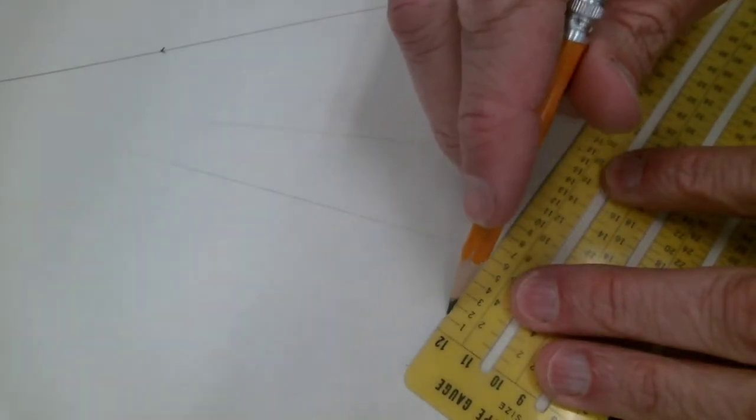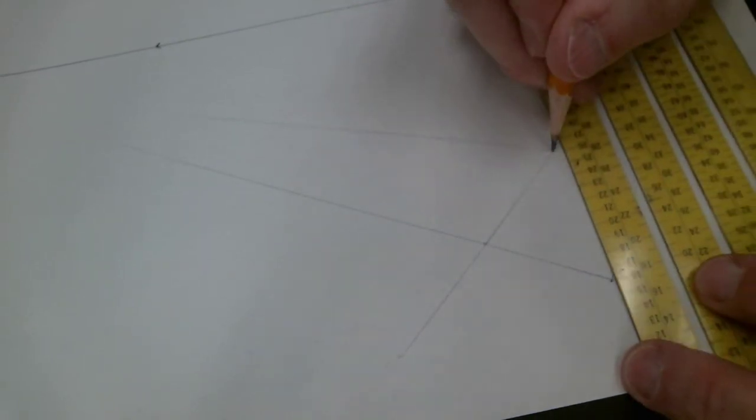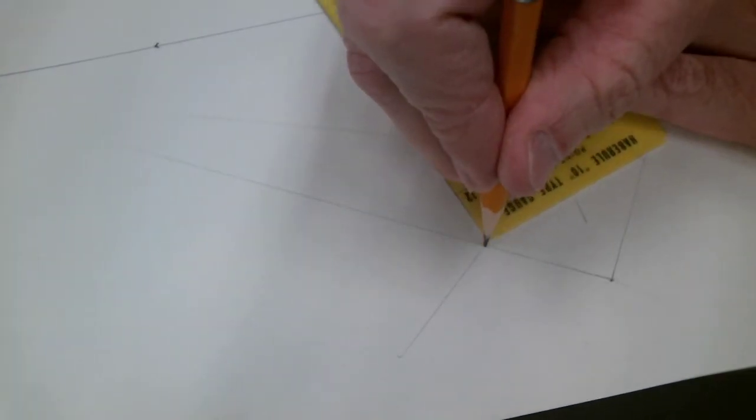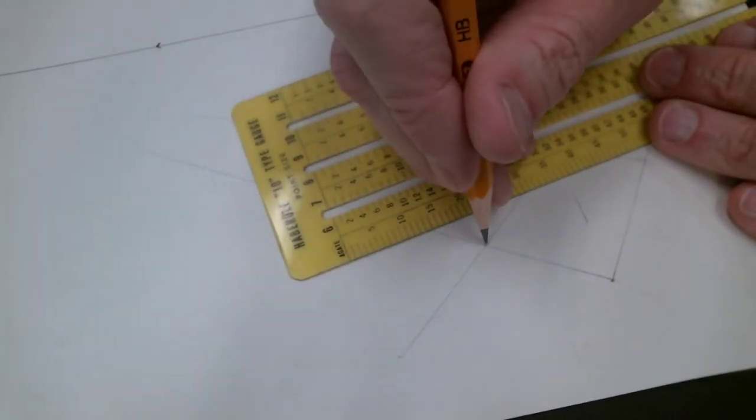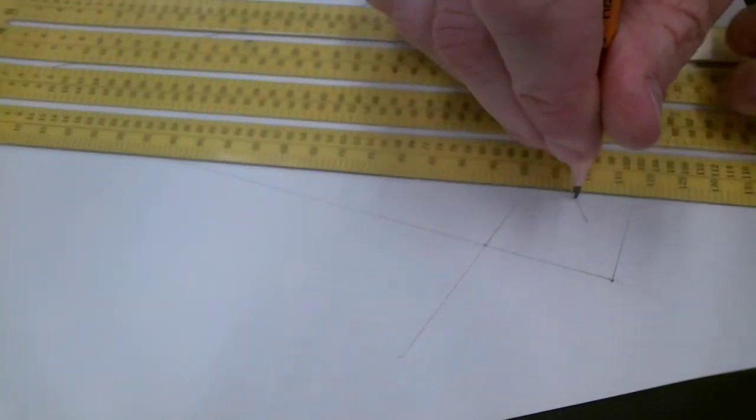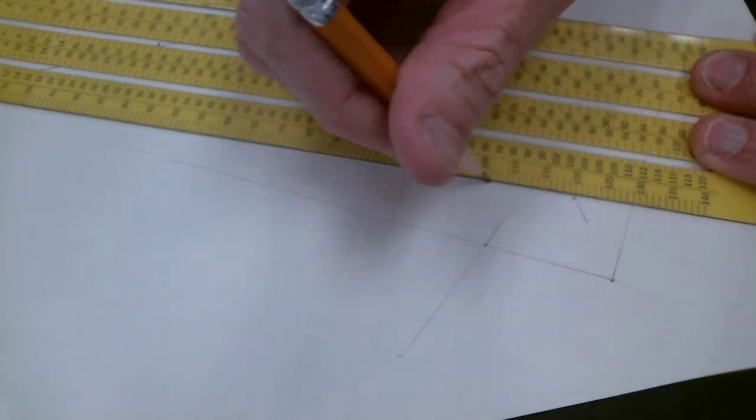Just extend it down a little bit. Then you just need to find the center of that just to start the midpoint. And this can be pretty light because it's just there to help for the measurements.